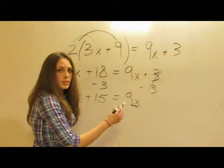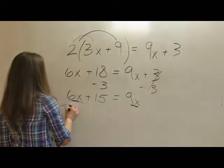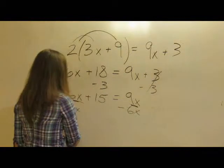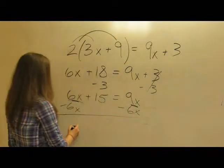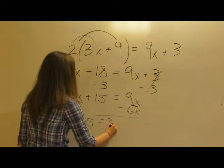To make sure that we have the same thing on each side of the equation, so we can subtract 6x from both sides. That gives us 15 equals 3x.